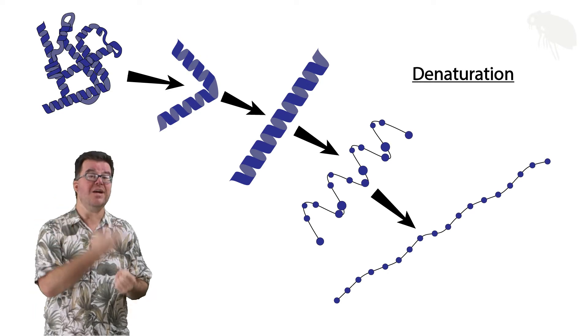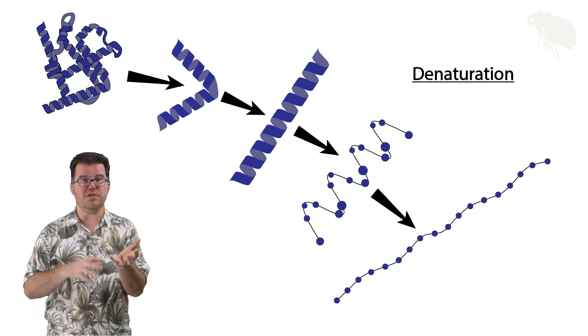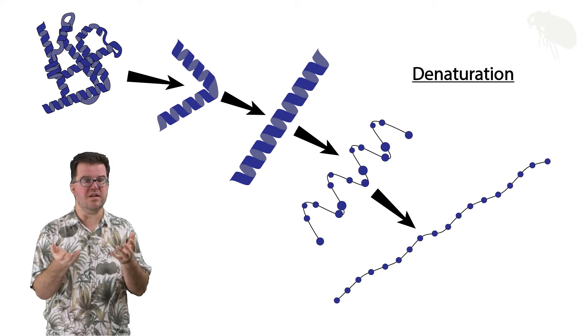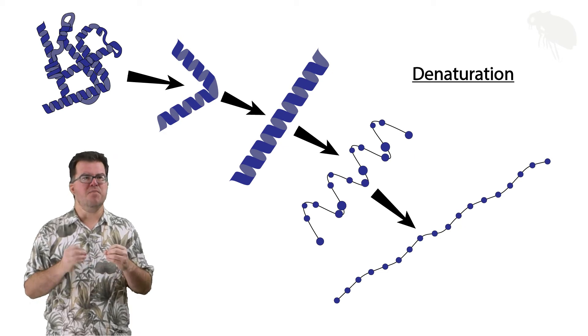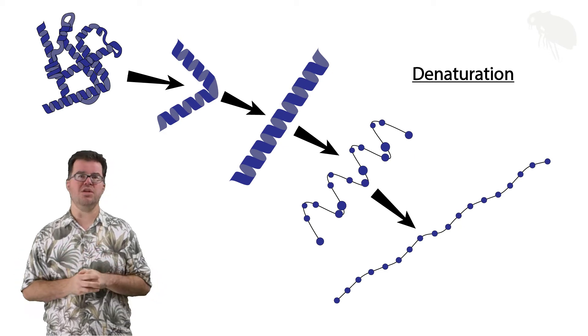The process of denaturation leads to cell death because cells count on proteins to do so many jobs. If the proteins unfold, they lose their functions and the cell can't survive. But we don't have to go to the extreme of denaturation to see the importance of protein conformation.